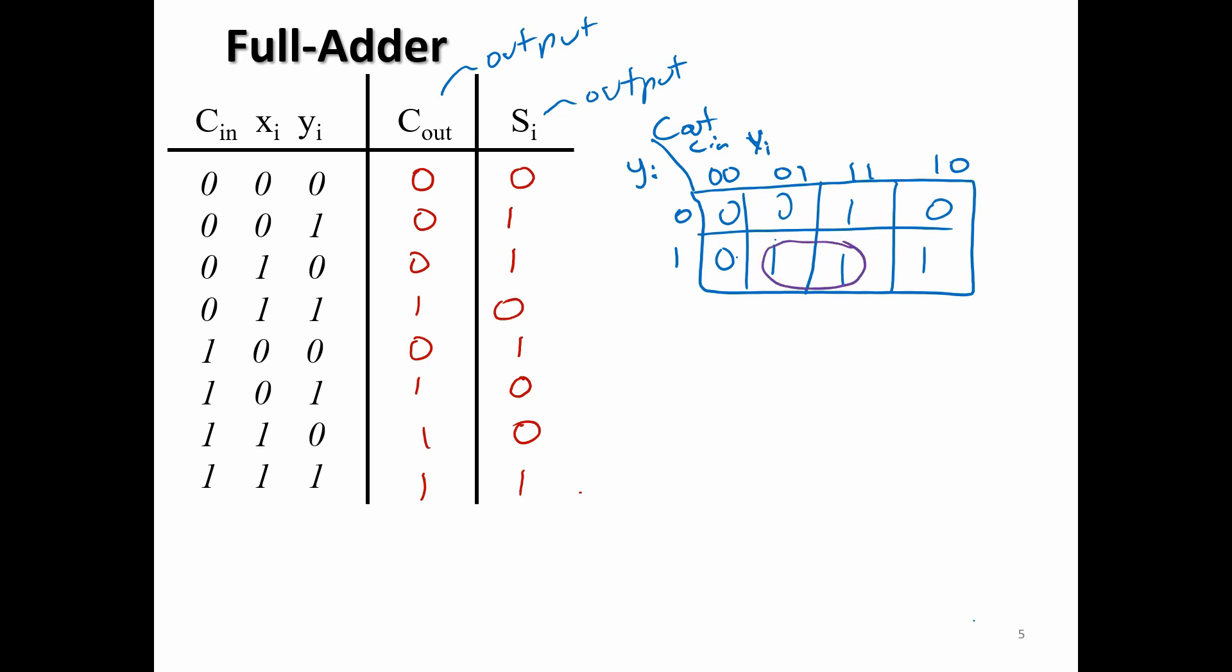So if we're circling groups like this. So for the purple, we have xi and yi. For the green, we have c in xi. And for the red, we have c in yi. And remember these are plus, plus. And that is equal to c out.